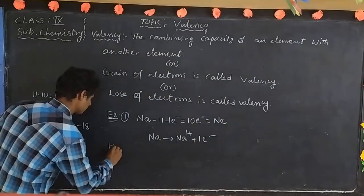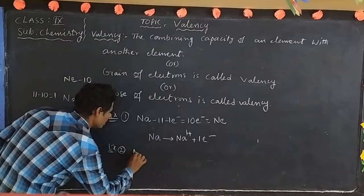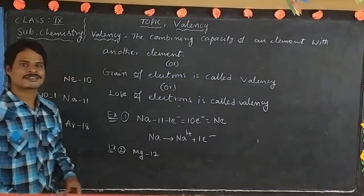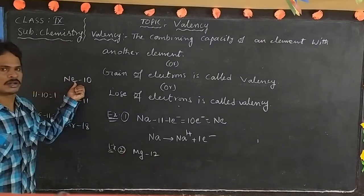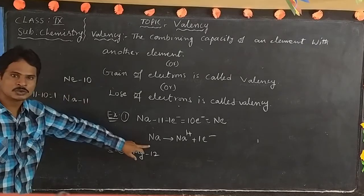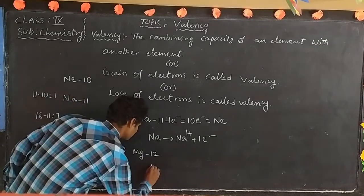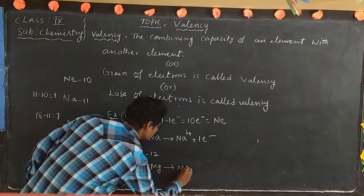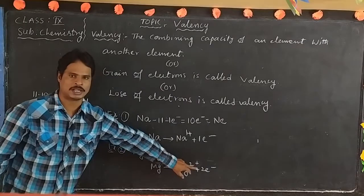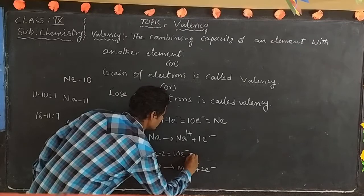Example two: magnesium, atomic number 12. How many electrons does magnesium lose to get neon's electronic configuration? Neon is 10. Magnesium loses two electrons to become Mg²⁺, giving 12 minus 2 = 10 electrons, equal to neon's configuration.